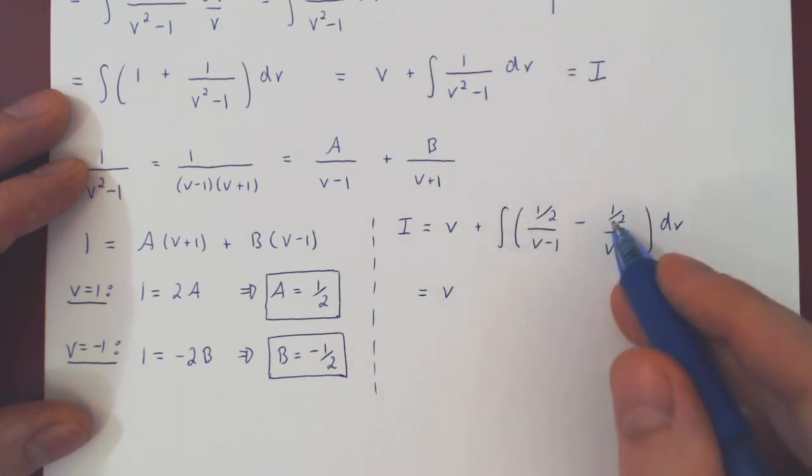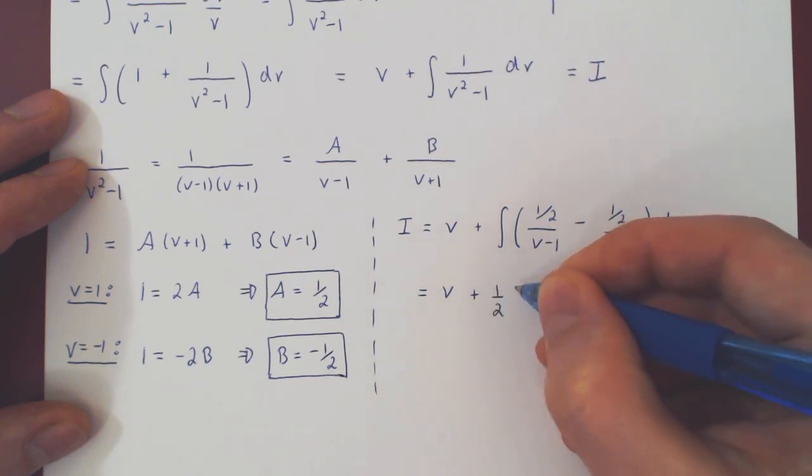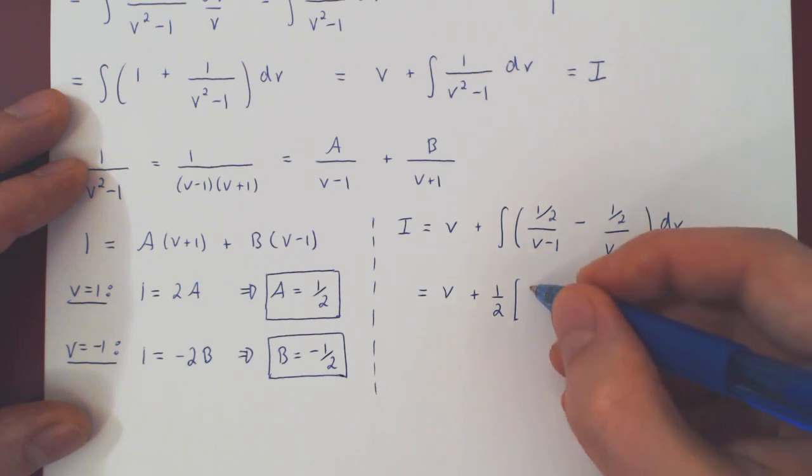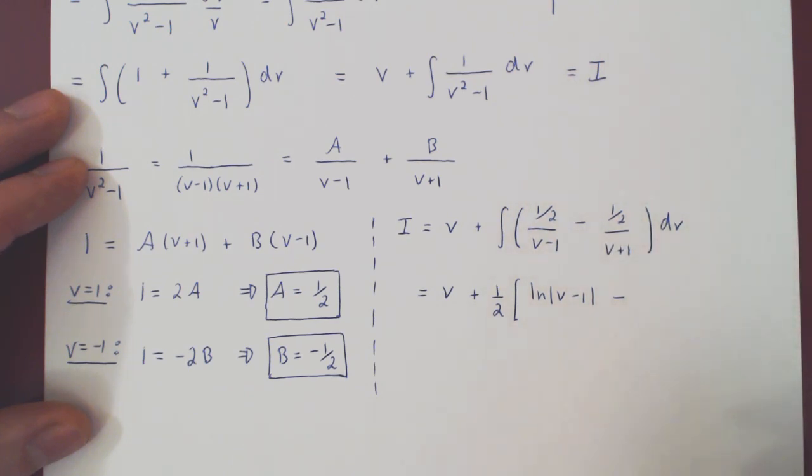well v, we can factor a half from both of these functions, so plus 1 half. And if we do so, we're left with 1 over v minus 1, which integrates to the ln of v minus 1, minus the integral of 1 over v plus 1, which of course integrates to the ln of v plus 1. And of course, plus c.